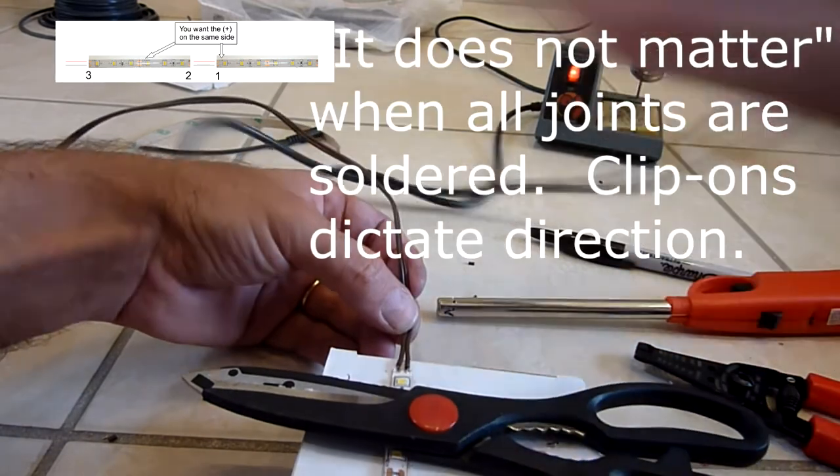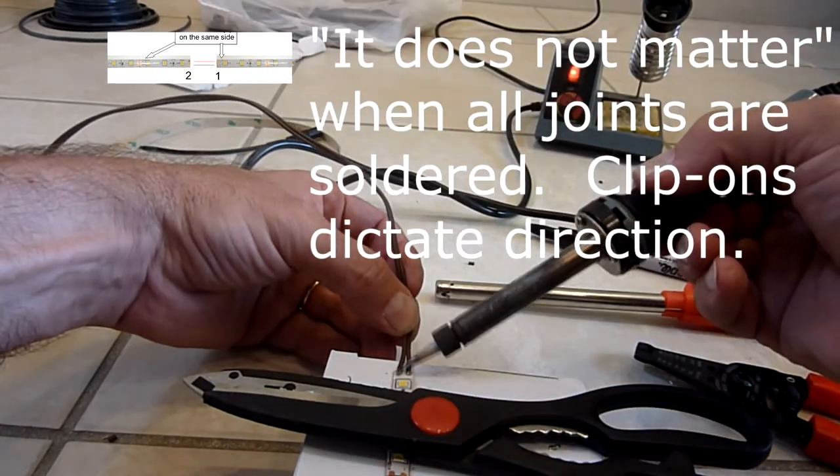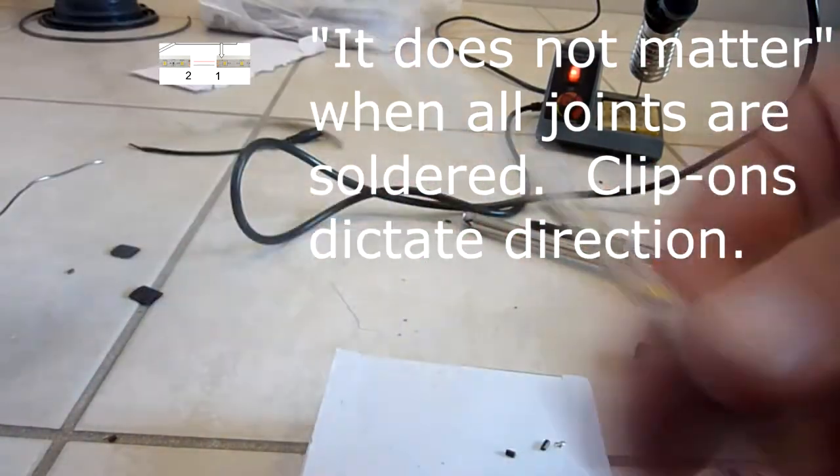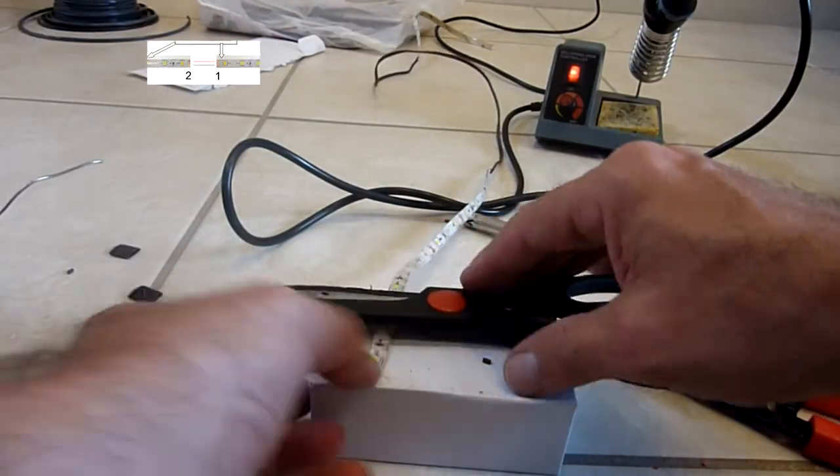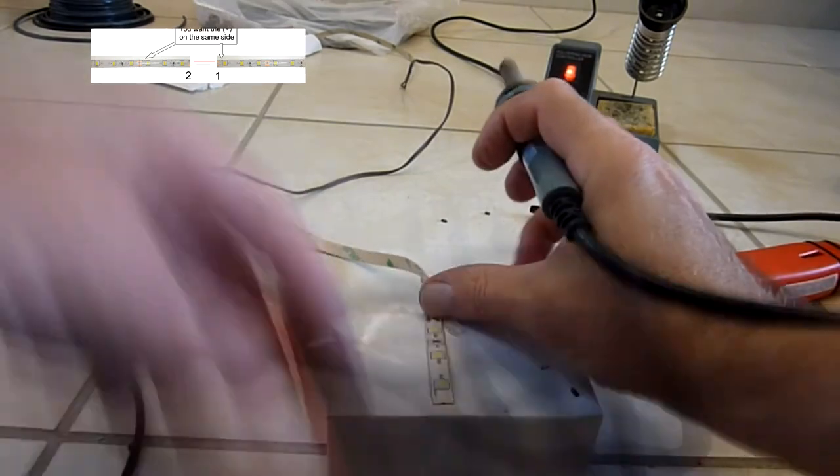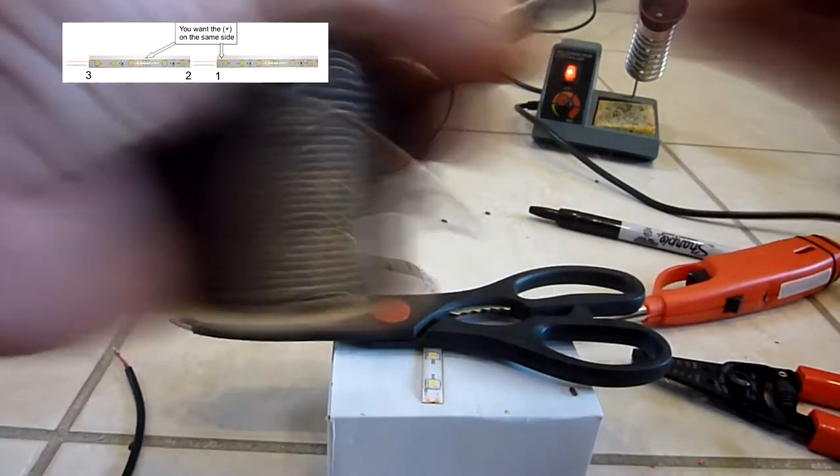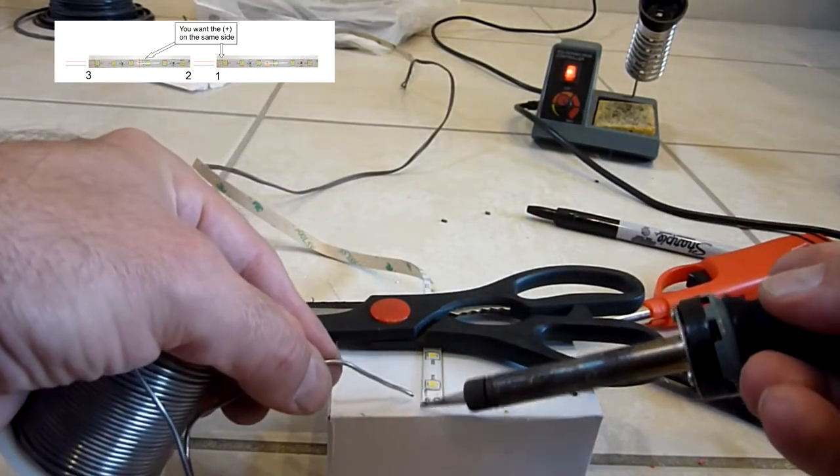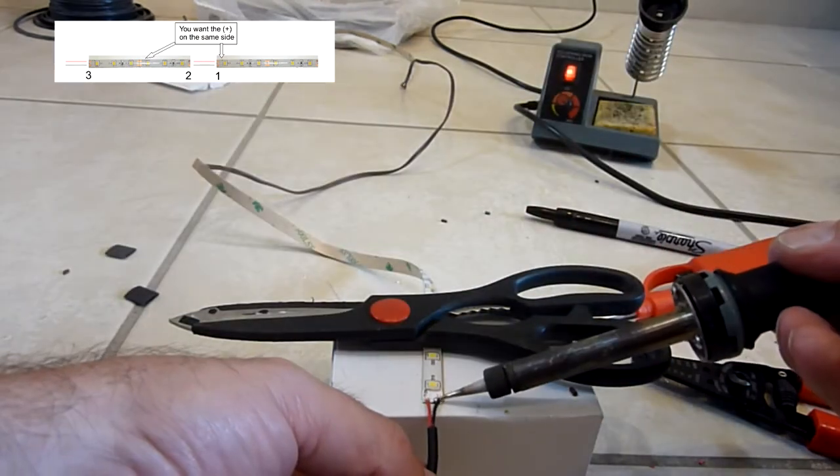It doesn't matter which one's on top, which one's on the bottom, could be positive or negative, but in the end you just want to try to get them in a straight linear line. When you solder these joints you do want to use best practices and put a little solder on the end of the wire and a little bit on the contact on the LED wire and then just use the soldering iron to join the two.